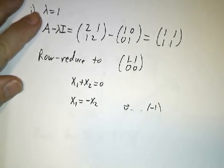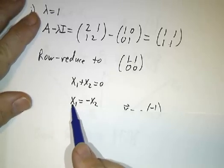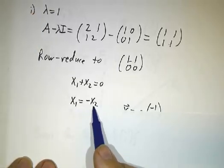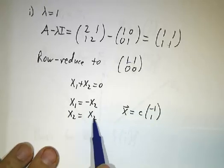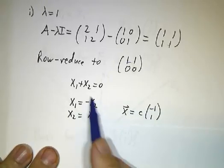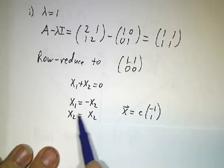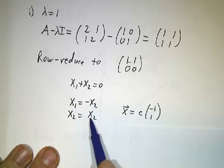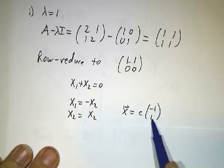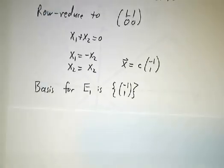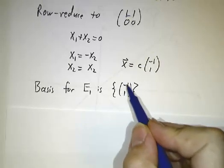And we rewrite that as an equation for the pivot variable in terms of the free variable. And then we pad it with x2 equals x2 and put these two things together. And it says the whole vector x, x1, x2, is a certain constant, namely x2 times. So the basis for this eigenspace is just the single vector.